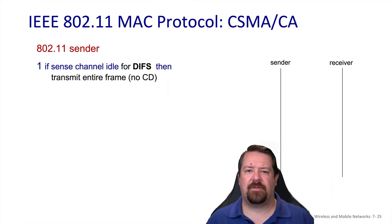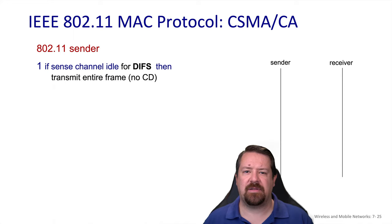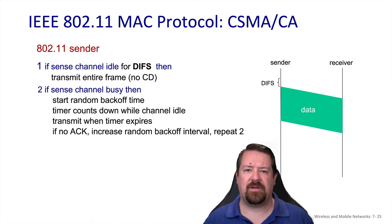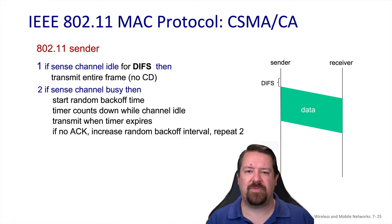First, there is a specified listening period called DIFS — the DCF Interframe Space, where DCF is Distributed Coordination Function — before beginning transmission. If no other transmission is detected during DIFS, the data frame is transmitted in its entirety, since we can't sense collisions in wireless. If the channel is already in use during the DIFS period, the transmitter waits and starts a random backoff timer before sensing again. This randomized backoff prevents all waiting transmitters from beginning at exactly the same time once the channel clears, which would cause collisions. The random backoff ensures hopefully only one host begins transmitting at a time.